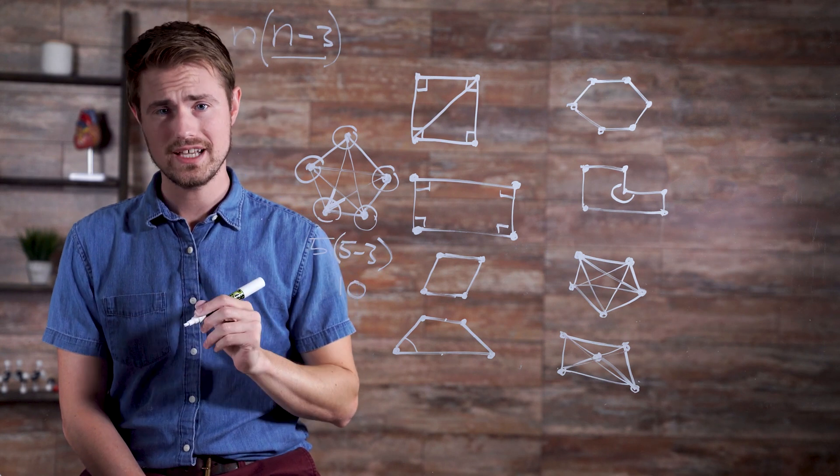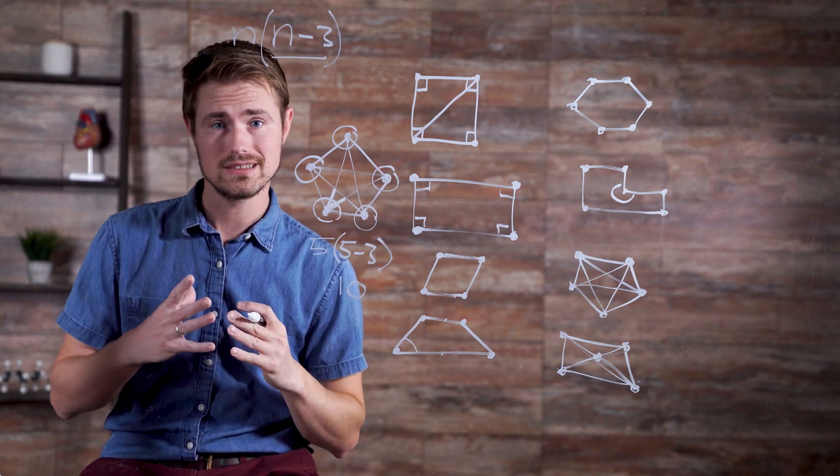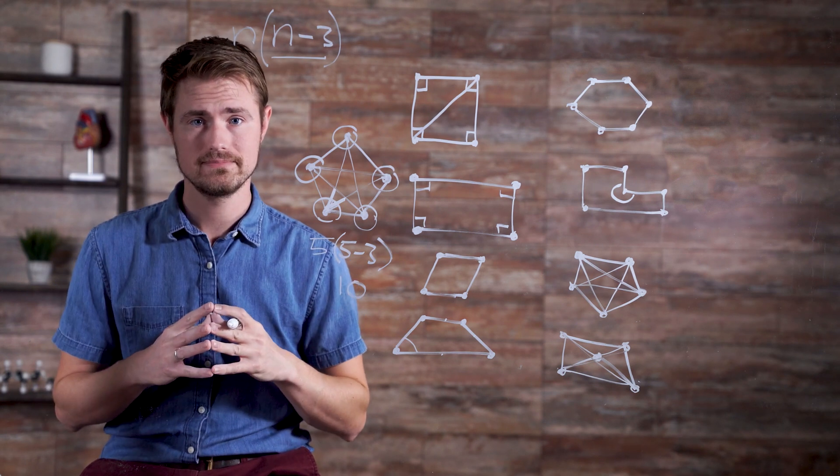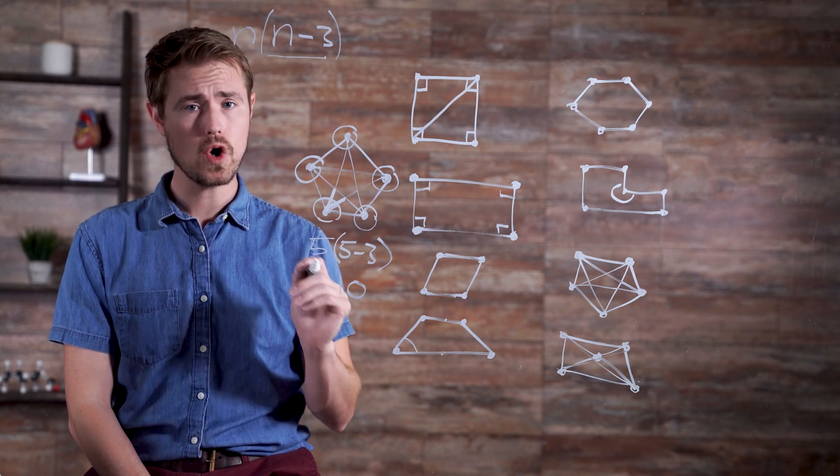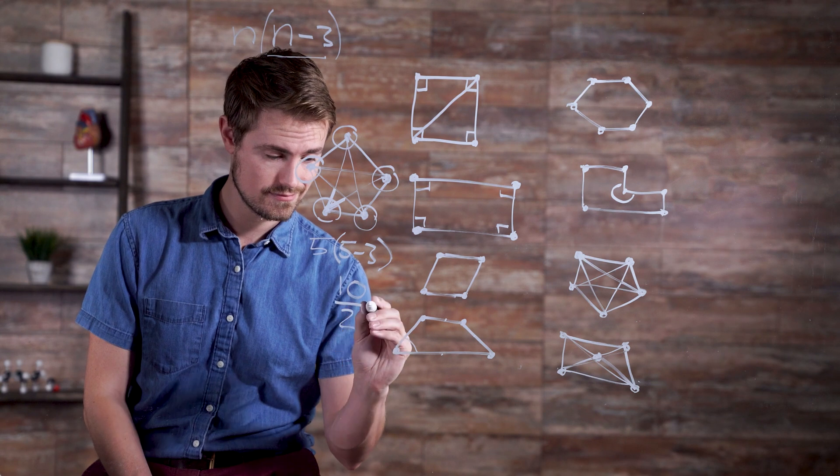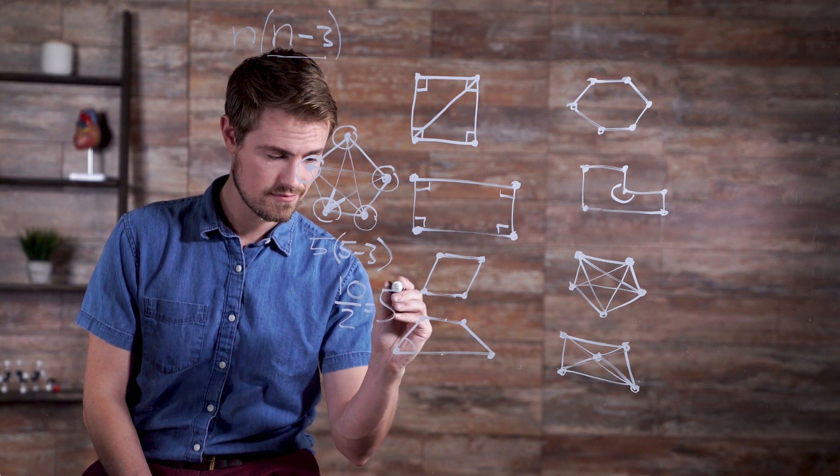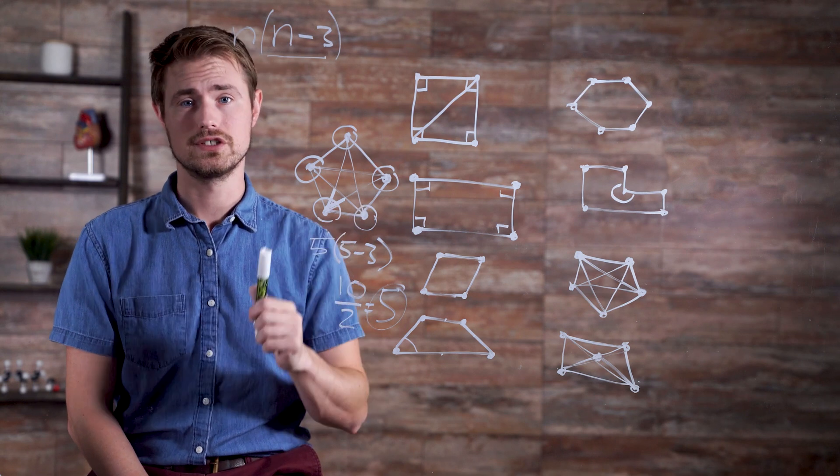When we figure out this total though, we are counting each diagonal twice because diagonals have two endpoints. In order to figure out the number of unique diagonals, we need to divide our total by two. In our pentagon, this looks like five, which corresponds to our diagram.